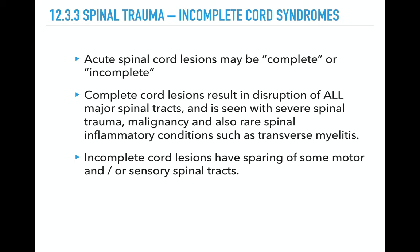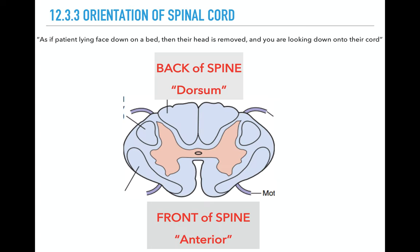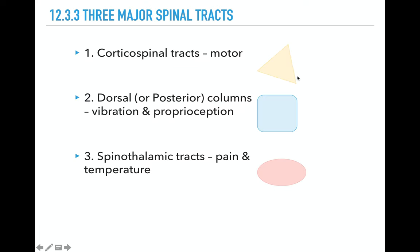Incomplete cord syndromes. A complete cord syndrome is when you have complete disruption of all the spinal tracts. Incomplete means there is some sparing of the nerve fibers, so you can have patchy motor deficit and some sensory deficit, but it's not complete. Looking at the spinal cord diagram — this is the back and this is the front — I've identified three major tracts: corticospinal (motor) shown as a yellow triangle, dorsal columns (vibration/proprioception) in blue, and spinothalamic tracts in red. Spinothalamic is pain and temperature.